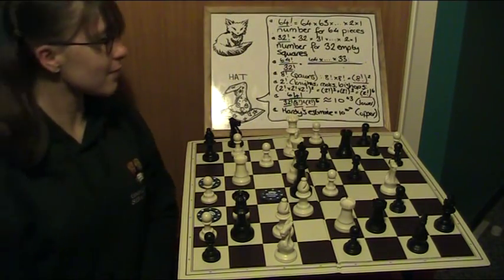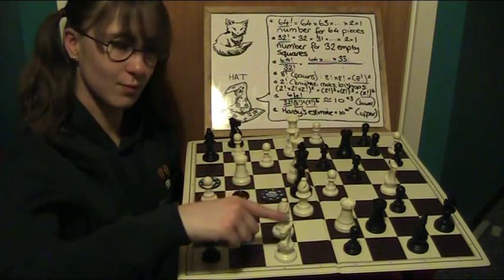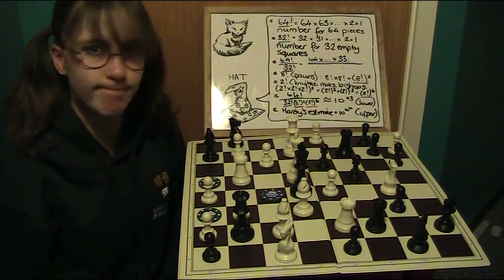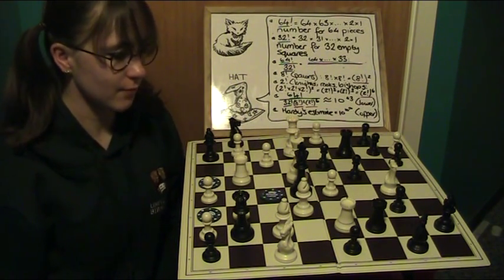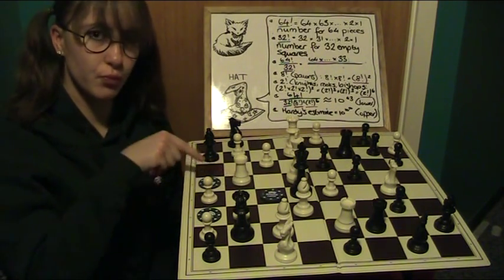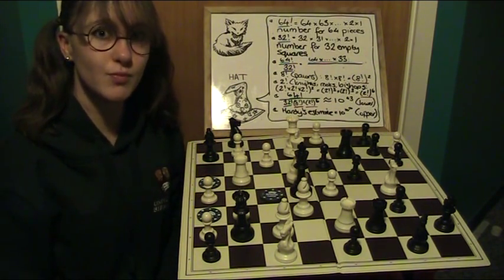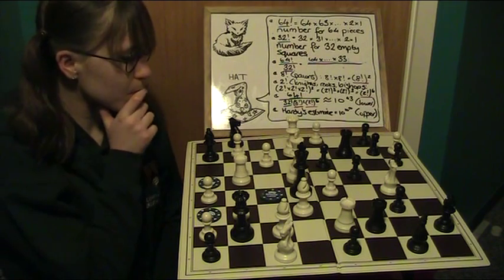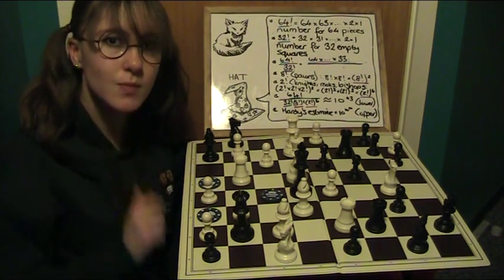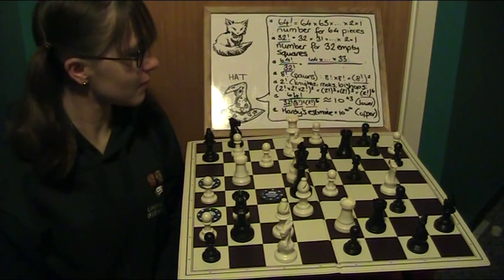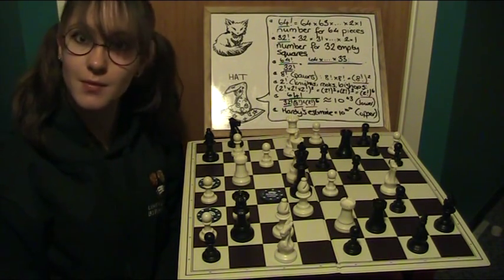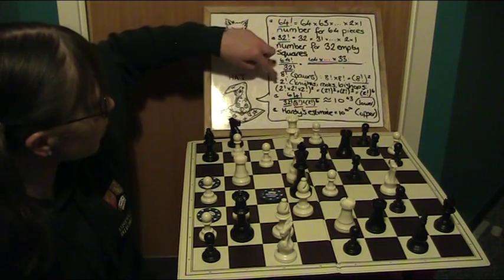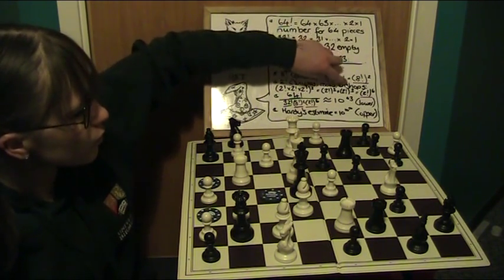We can also use the same method for the 2 rooks and the 2 knights. But bishops are a bit different because are they really unique? Well, no. Because one bishop can only move across white squares and the other can only move across black squares. However, notice that 2 is the same as 2 times 1 which is the same as 2 factorial. So we can group the number of ways of combining these 2 bishops with the same as interchanging the knights and the rooks.